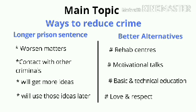The main topic here is discussing about different ways to reduce crime. So the main topic is ways to reduce crime, and there are two sub-points: one being longer prison sentence and the second being better alternatives. So let's draw two columns. At the top, let's write the main topic, which is ways to reduce crime. Column A is for longer prison sentence and column B would be for better alternatives.